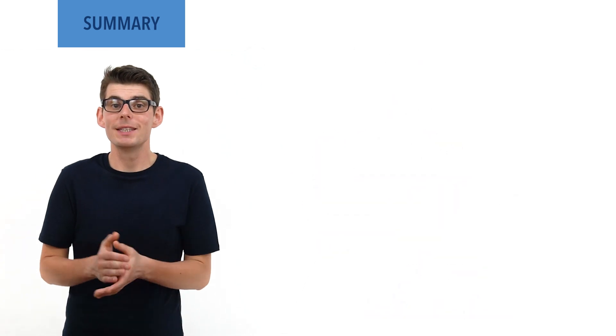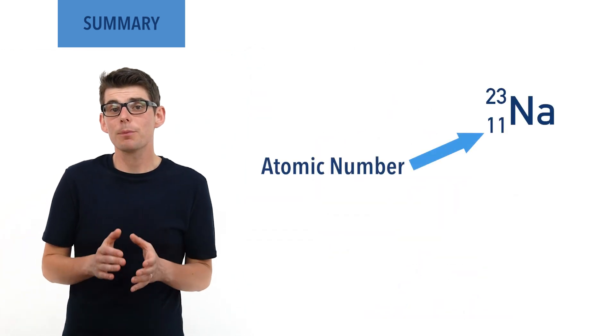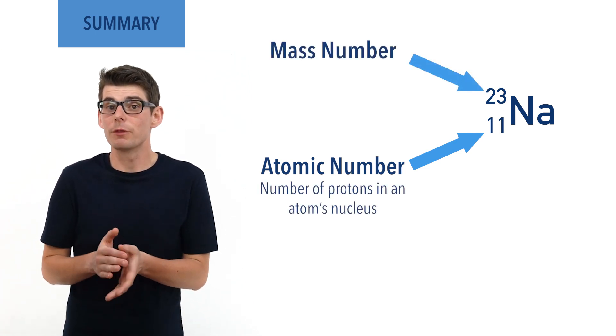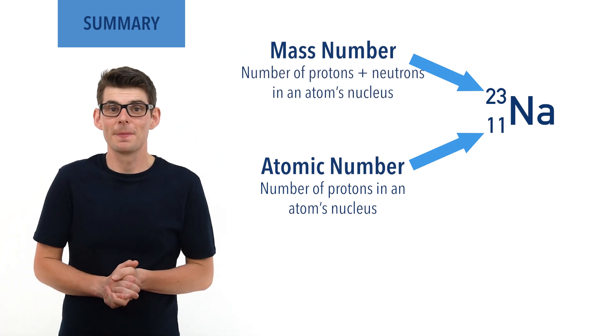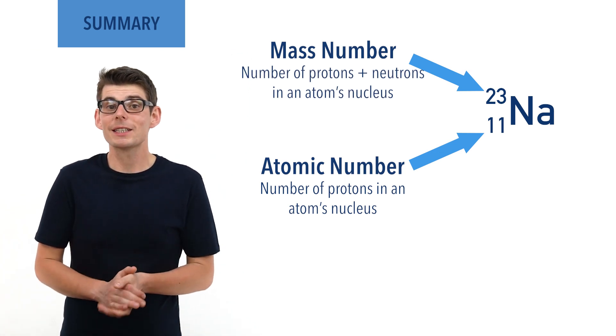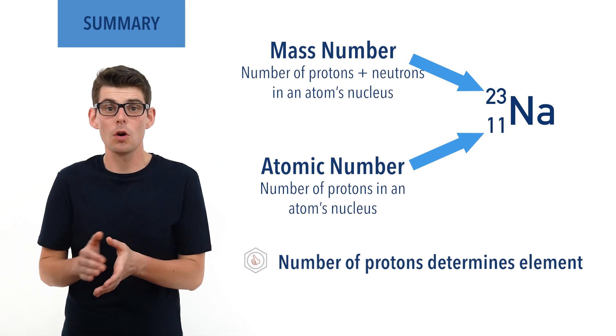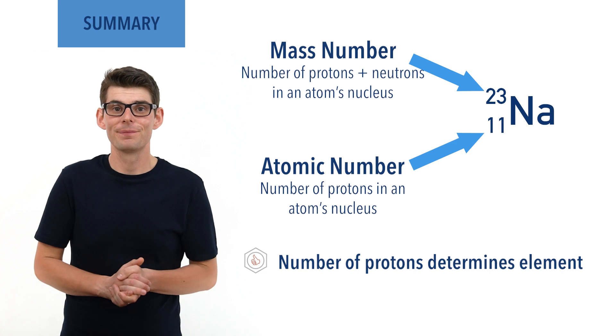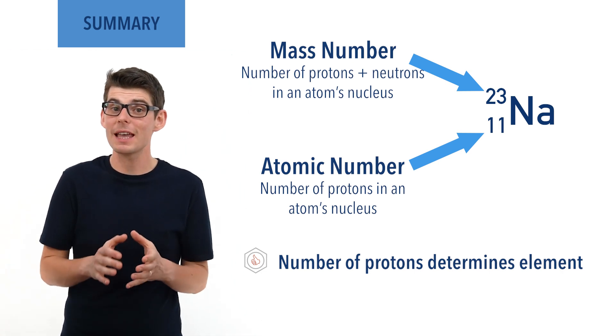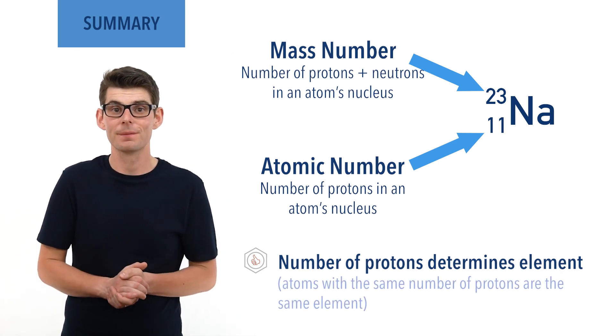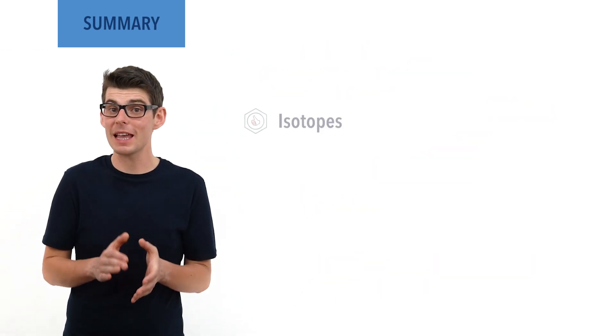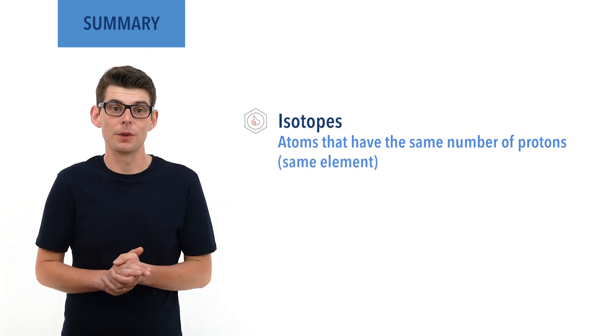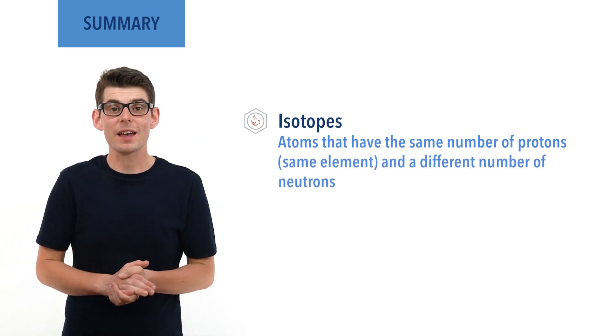Atoms are assigned an atomic number that refers to the number of protons in its nucleus, and a mass number that refers to the combined number of protons and neutrons in its nucleus. The number of protons in an atom determines the element that it is an atom of, meaning atoms of different elements have different numbers of protons in them. Atoms of the same element always have the same number of protons as each other. Isotopes are atoms that have the same number of protons but different numbers of neutrons, meaning they have different mass numbers.